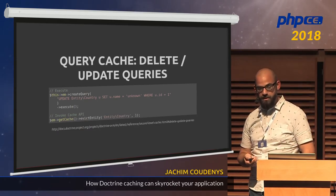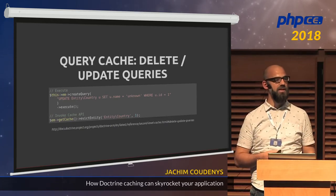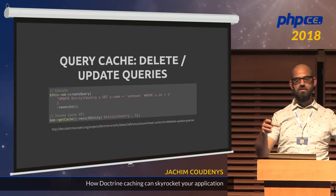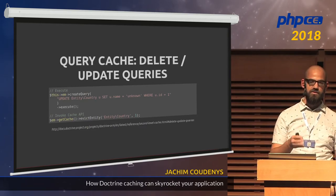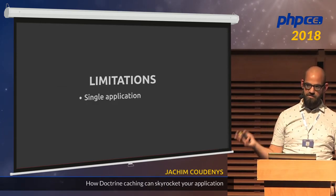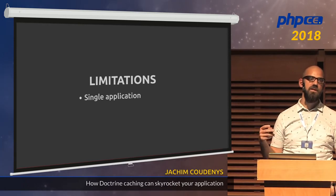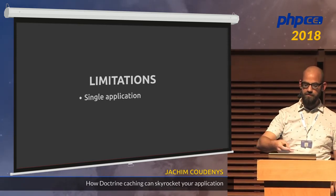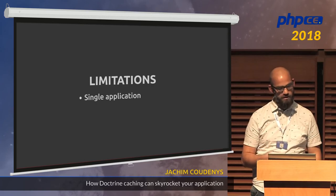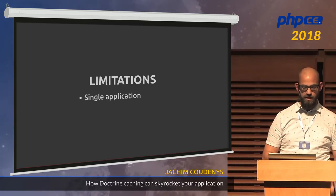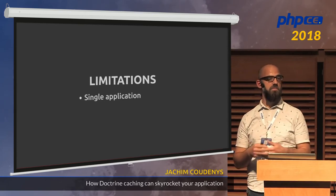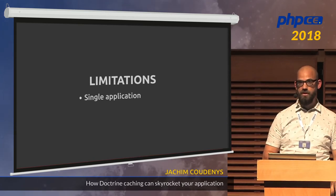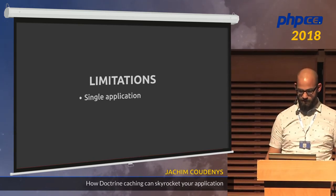Second level caching has some limitations. It has to be a single application — if you have a public-facing website using second level caching and a back-office pushing data into the database, this concept won't work because you have no way of telling the front-end that data has changed. Everything has to go through the entity manager. You also have to use a single primary key column, but that's not too bad.